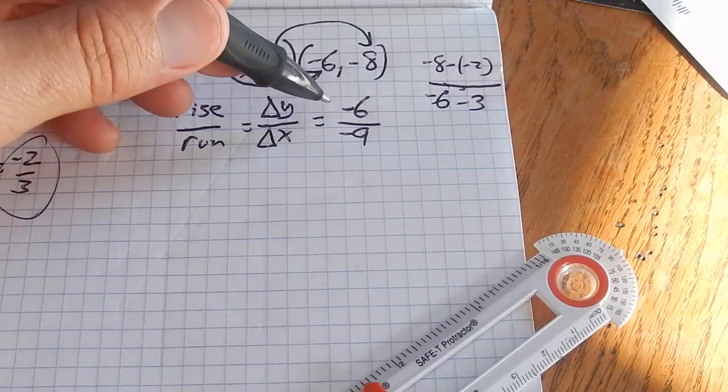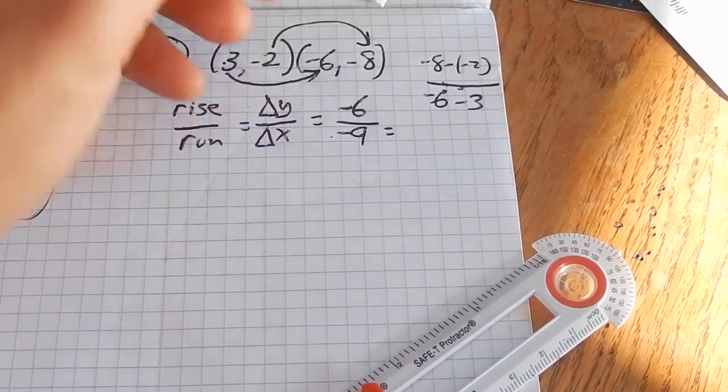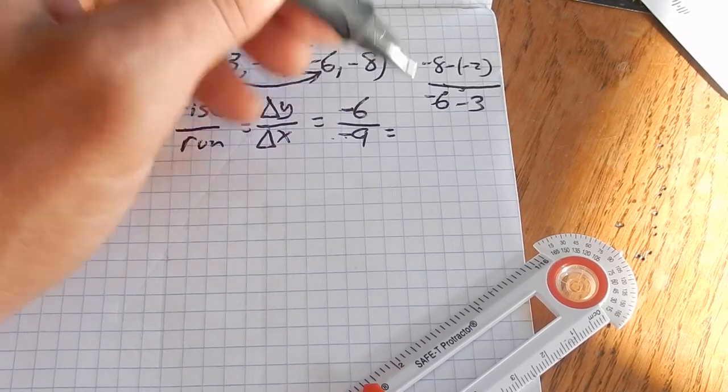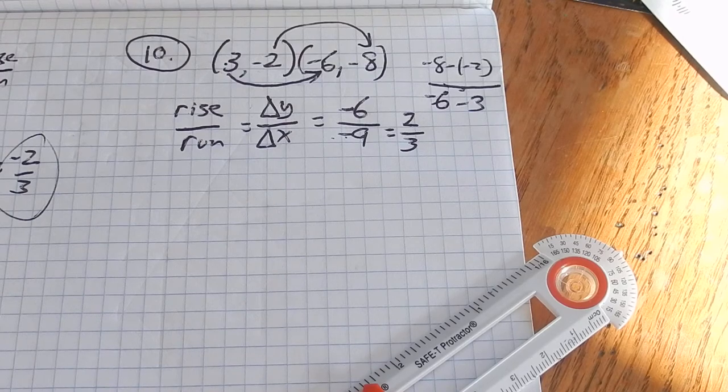Notice now I have rise over run. A negative divided by a negative is a positive, so this is going to be positive. Negative 6 over negative 9, both are divisible by 3, so that reduces to 2 thirds. There's my slope.